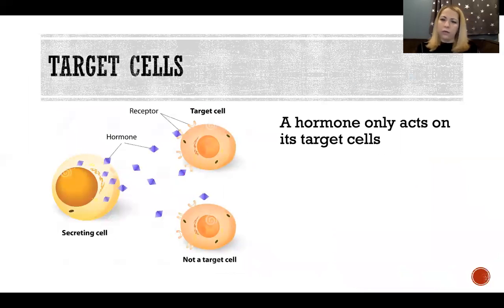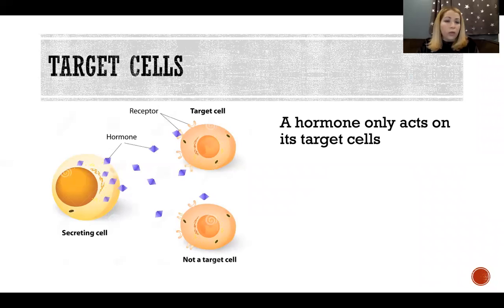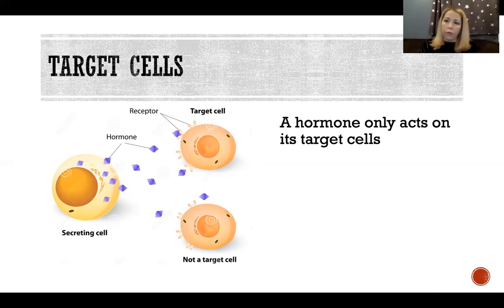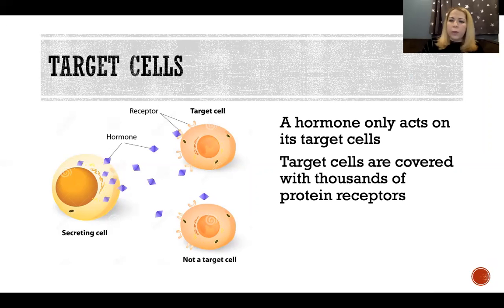Target cells are the cells in the body that specifically respond to a hormone. Any hormone is only able to act on whatever its target cells are. It might have many different kinds of target cells spread throughout the body, but a hormone can only act on its target cells. For a cell to be a target cell, it must have protein receptors on its surface that can receive that hormone.